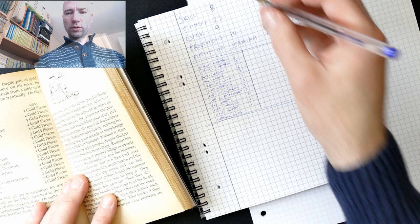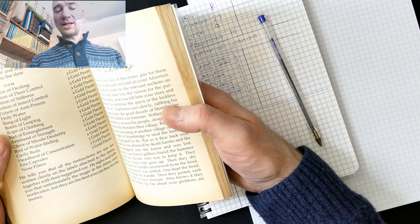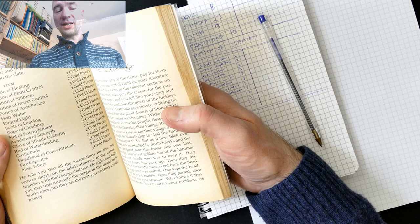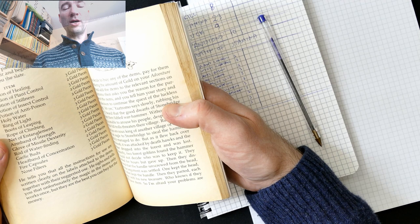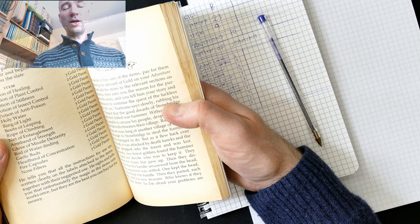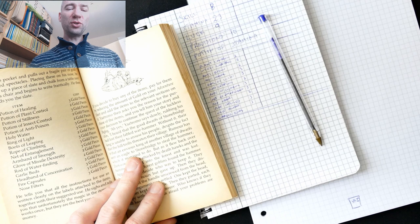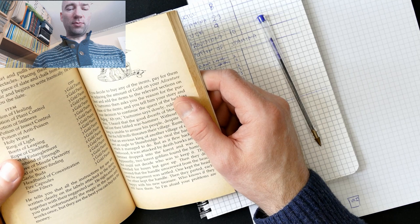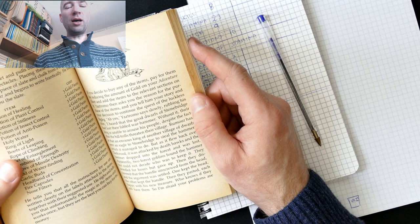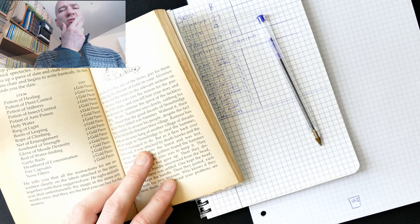He tells you that all the instructions for use are written clearly on the labels attached to the items, together with their suggested use. He sighs and tells you that, unfortunately, the magic in the items only works once, but they are the best you can buy for the money. If you decide to buy any of these items, pay for them by reducing the amount of gold in their adventure sheet. And add the items to the relevant sections on it. Yaztromo then asks you the reason for the purchase of the items, and you tell him your story and your decision to continue the quest of the luckless Big Leg. Ah, yes, Yaztromo says, slowly rubbing his chin.